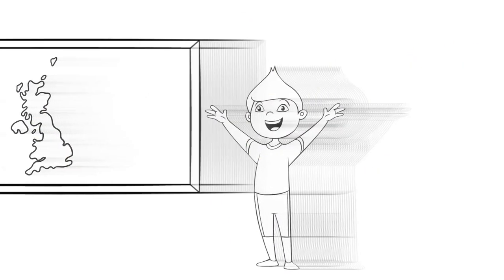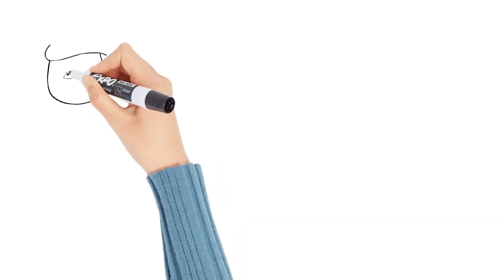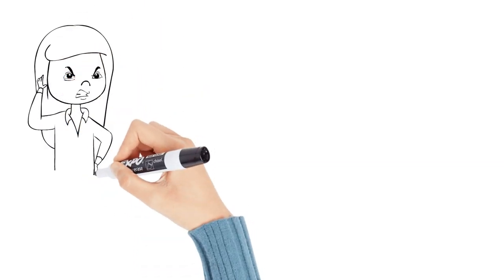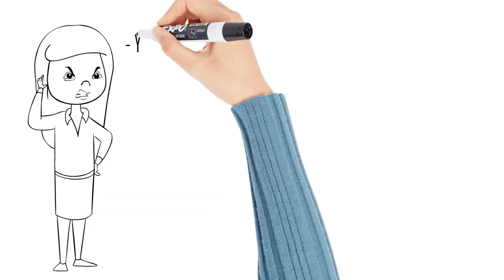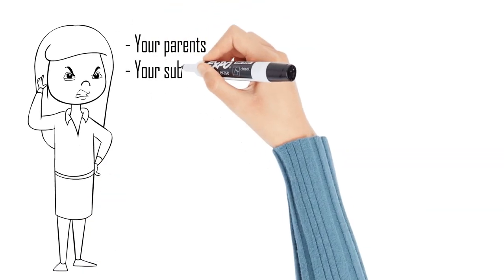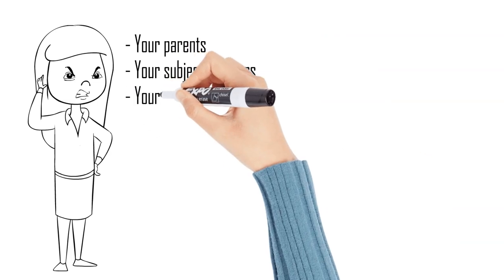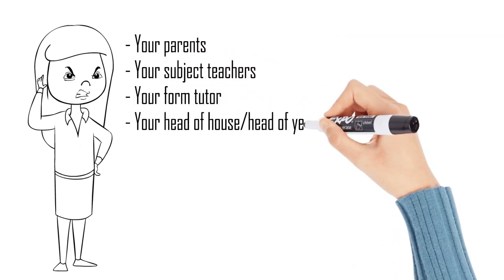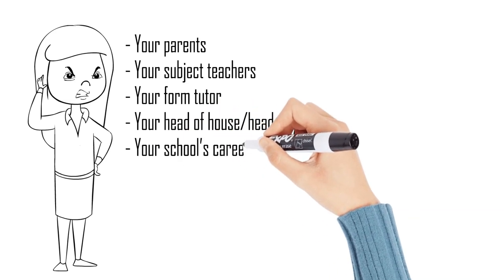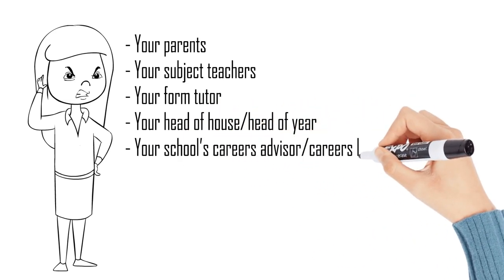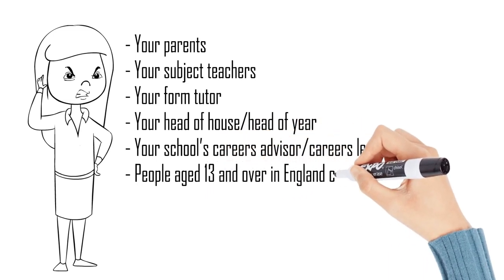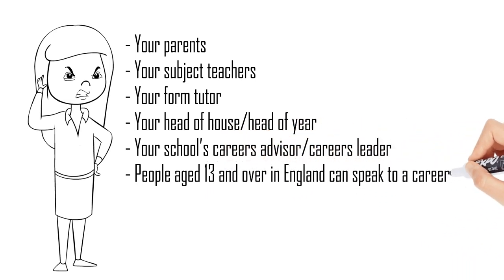There are lots of people you can speak to in order to get help when considering your options. It might help you to discuss option choices with your parents, your subject teachers, your form tutor, your head of house or head of year, your school's careers advisor or careers leader, and people aged 13 and over in England can speak to a careers advisor at the National Careers Service completely free.